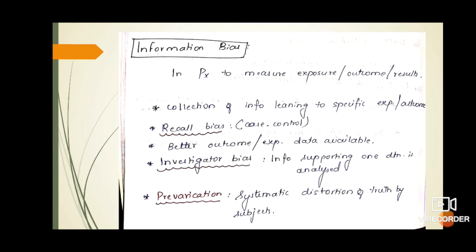Coming to information bias, it may be due to collection of info more towards a specific outcome or exposure. It includes recall bias during case-control or retrospective cohort studies when participants cannot recall chronology or symptoms. It also includes investigator bias where the investigator collects info supporting the study outcome. Prevarication is systematic distortion of truth by the subjects.